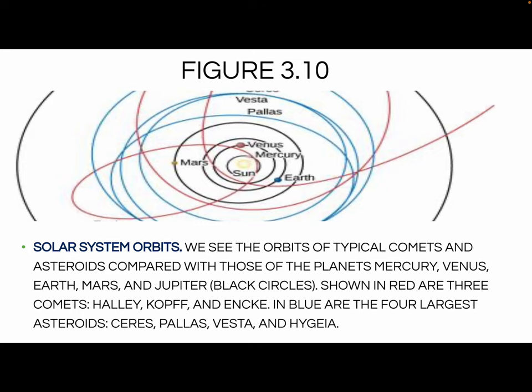So our solar system orbits. We see the orbits of a typical comet and asteroids compared to those of planets Mercury, Venus, Earth, Mars, and Jupiter. The black circles are the planets, the blue is going to be your asteroids, and the red is going to be your comets. Asteroids tend to be a little bit bigger than comets as they go across, and there are different shapes of orbits. The planet ones, for the most part, are close to circular.